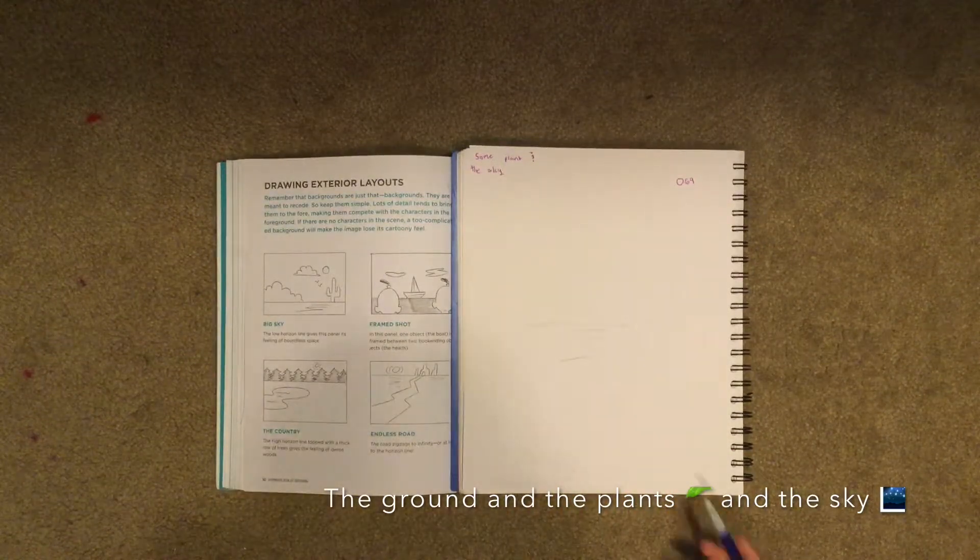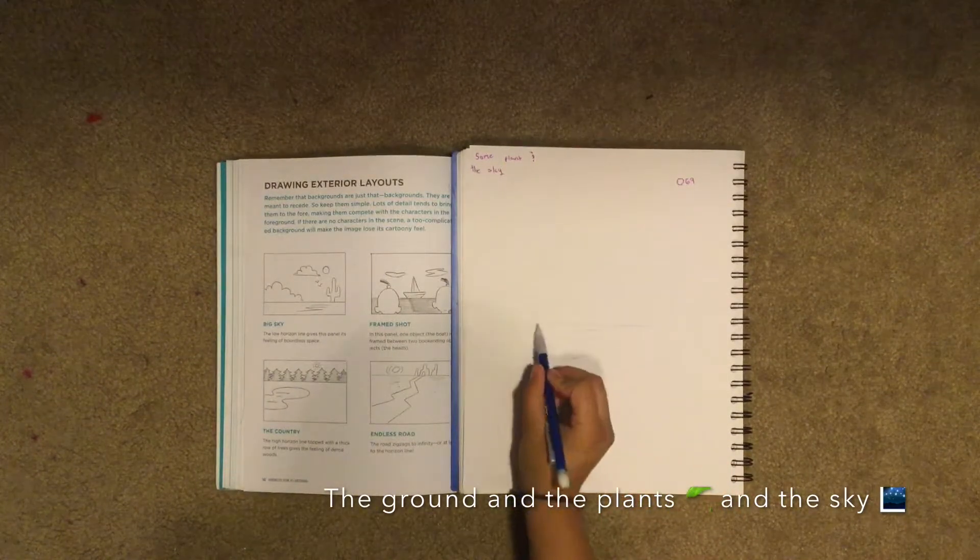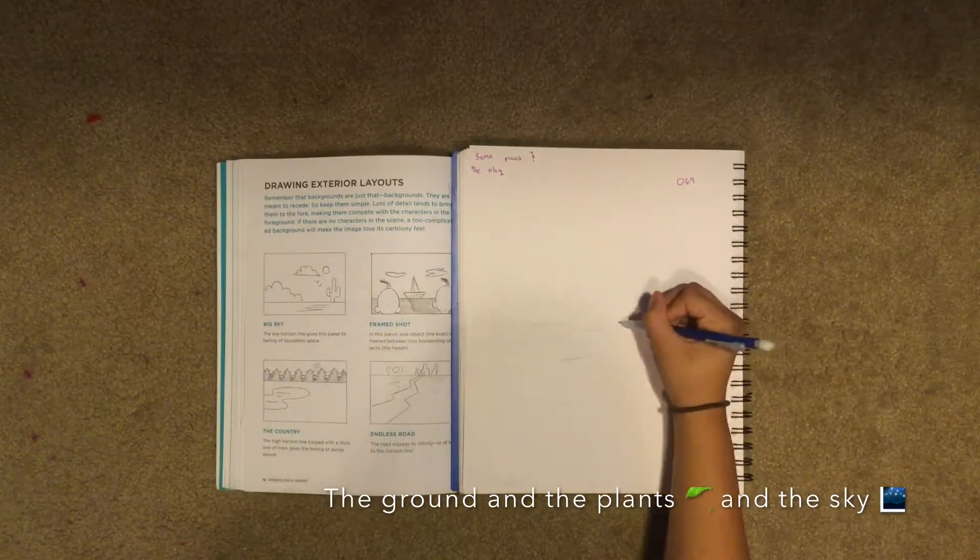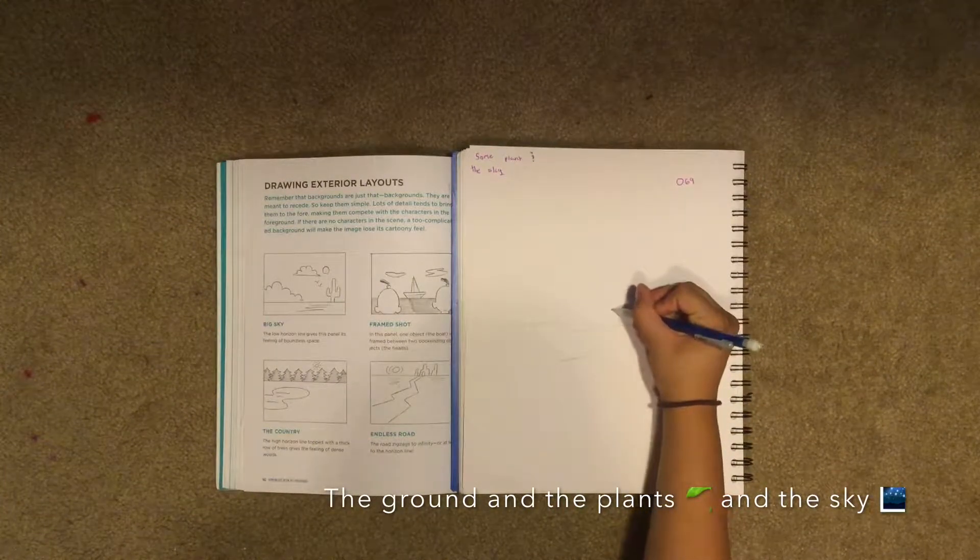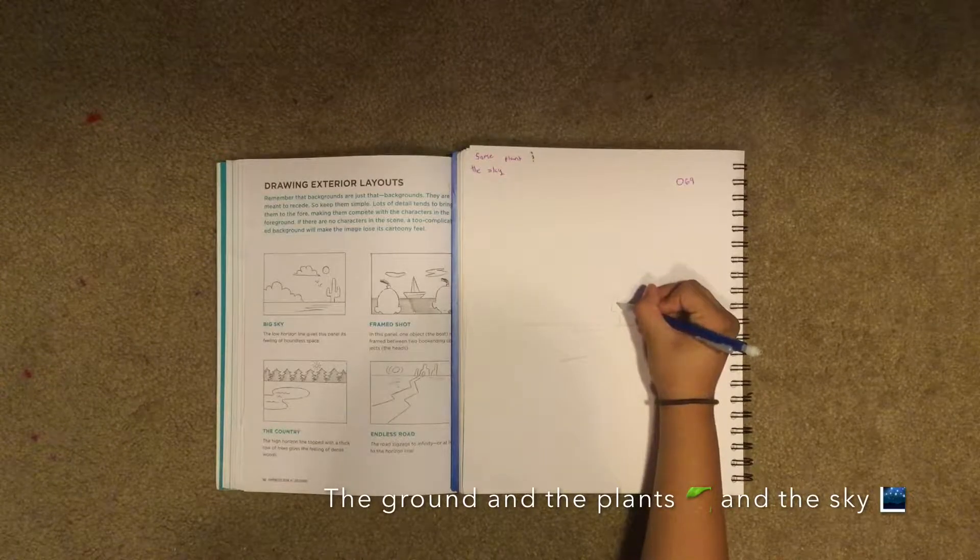Then we draw a cactus. We come up, we go around, and there's our first point.